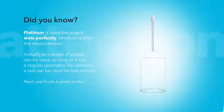Platinum is used because it wets perfectly, which simplifies the measurement. Actually, any shape of probe can be used as long as it has a regular geometry. For instance, a rod can be used for low volume. Next, we'll use a plate probe.